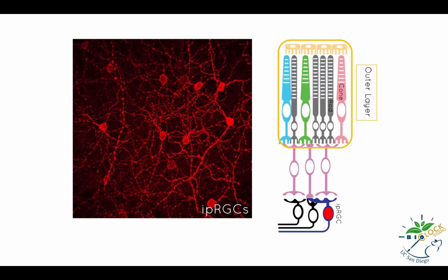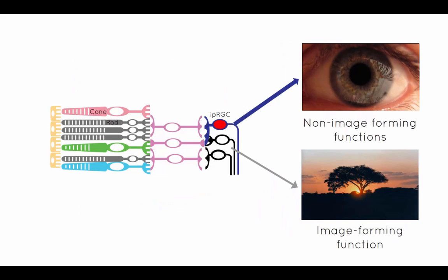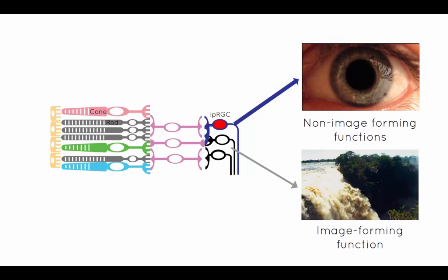IPRGCs reside in the innermost layer of the retina. They are a small subset of retinal ganglion cells that express a photopigment called melanopsin. This photopigment responds to light, allowing IPRGCs to become photosensitive.